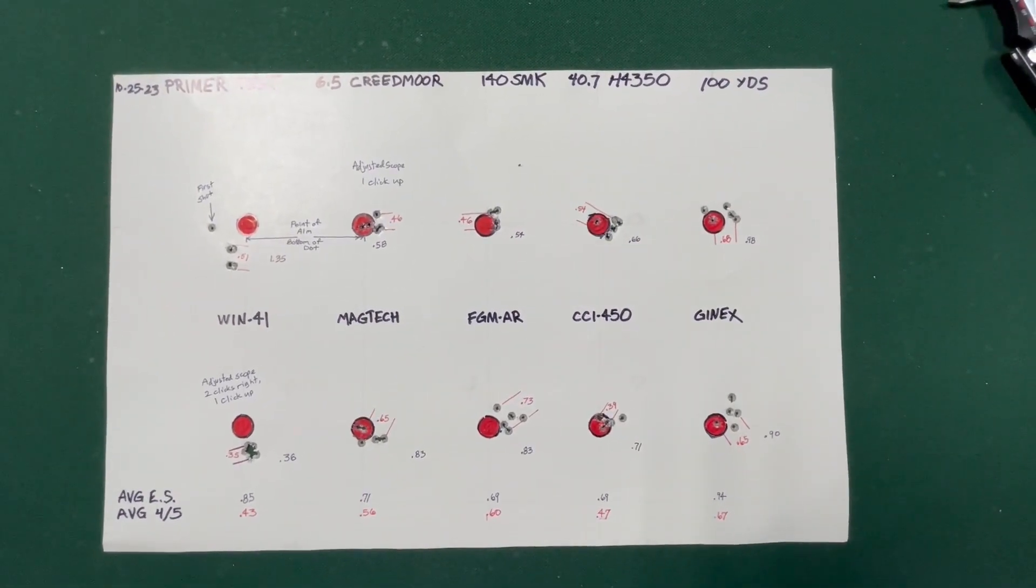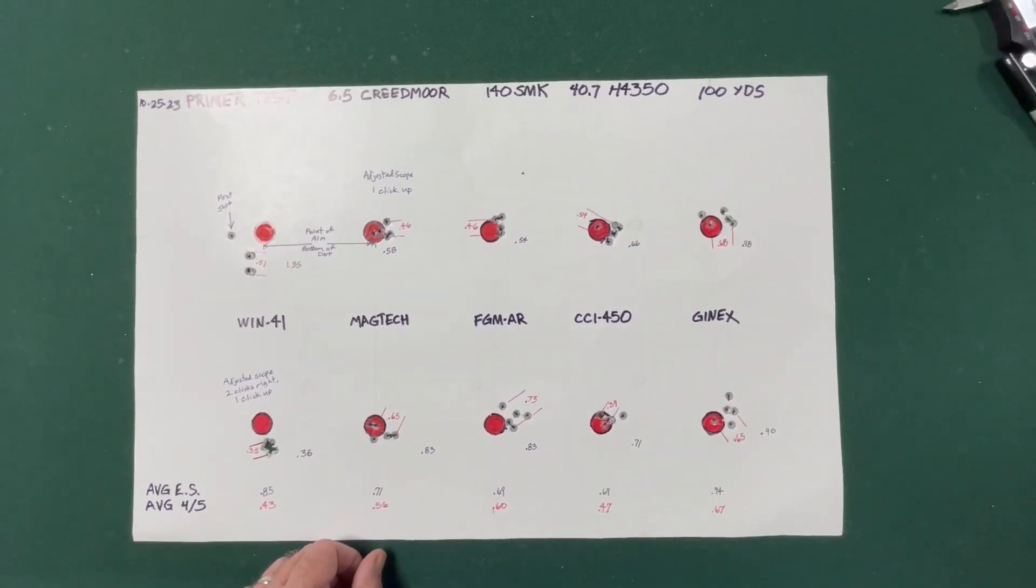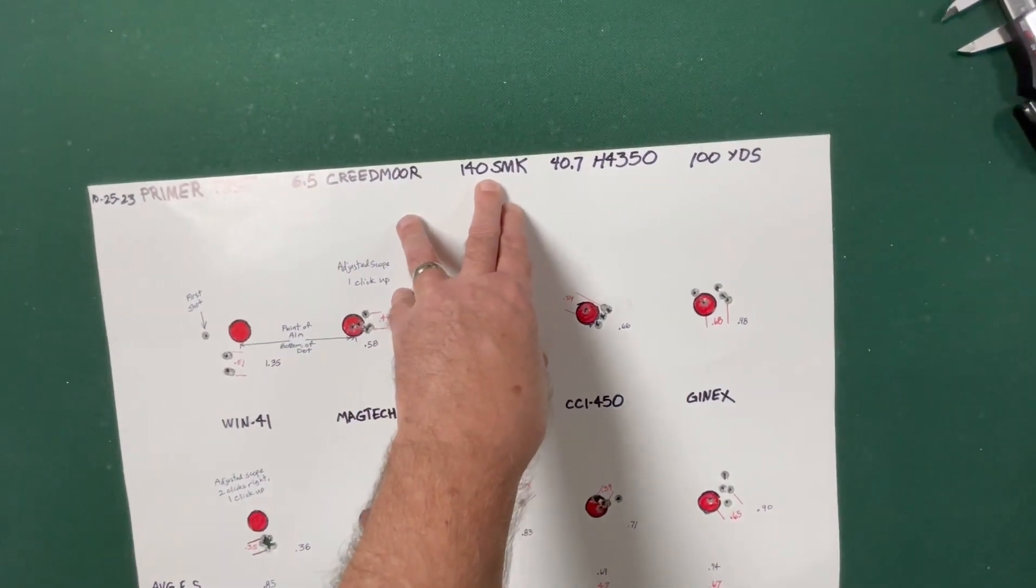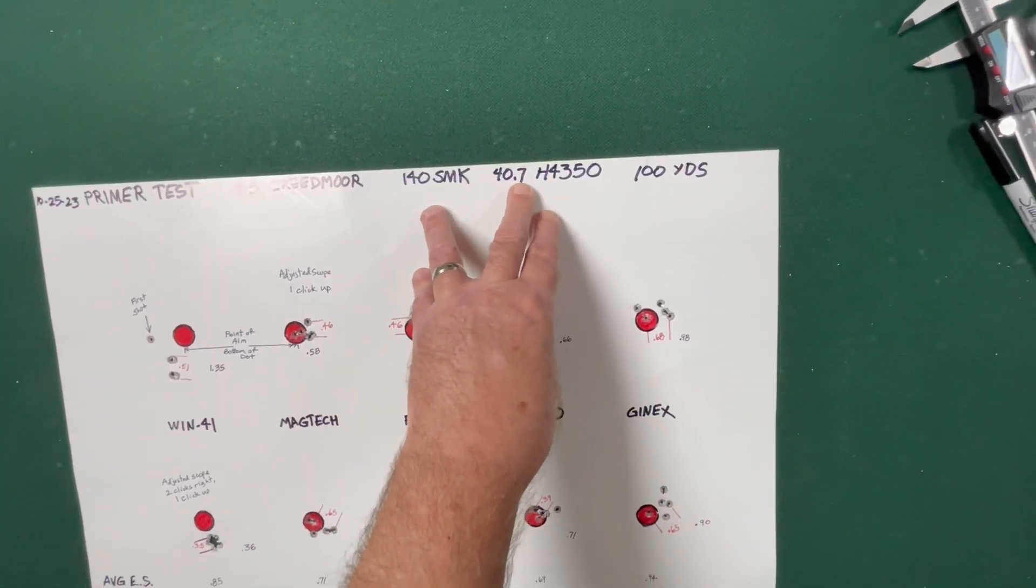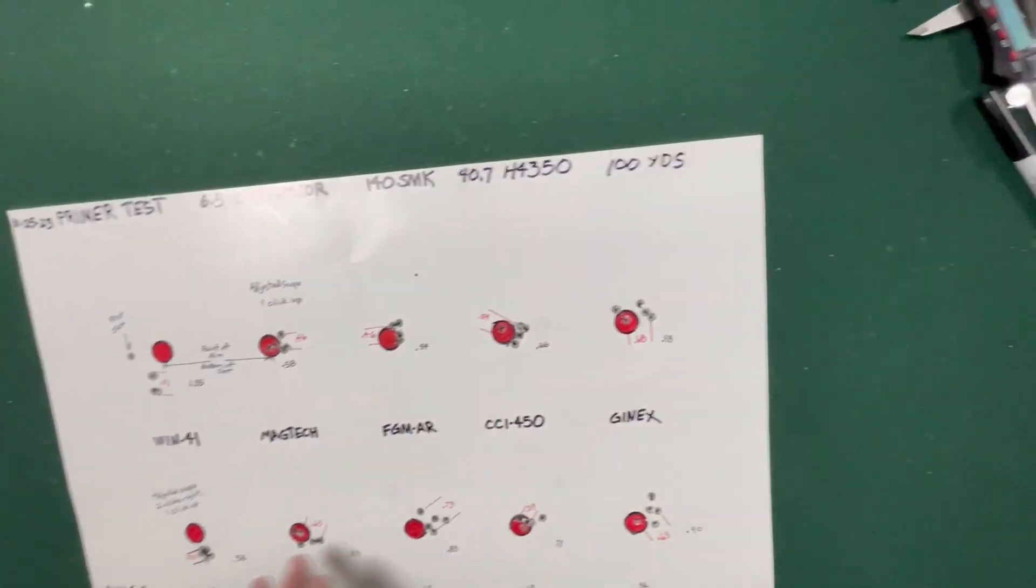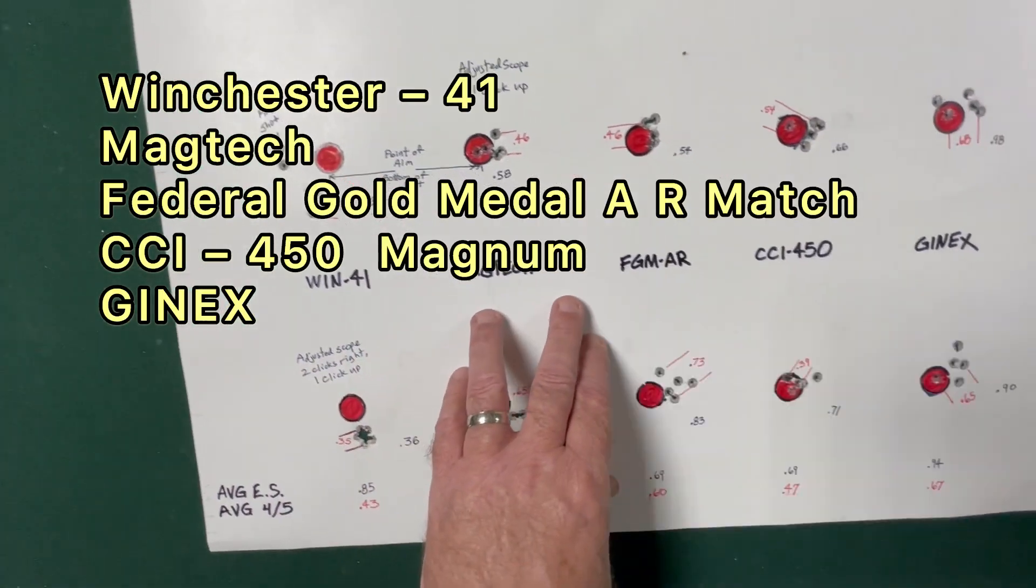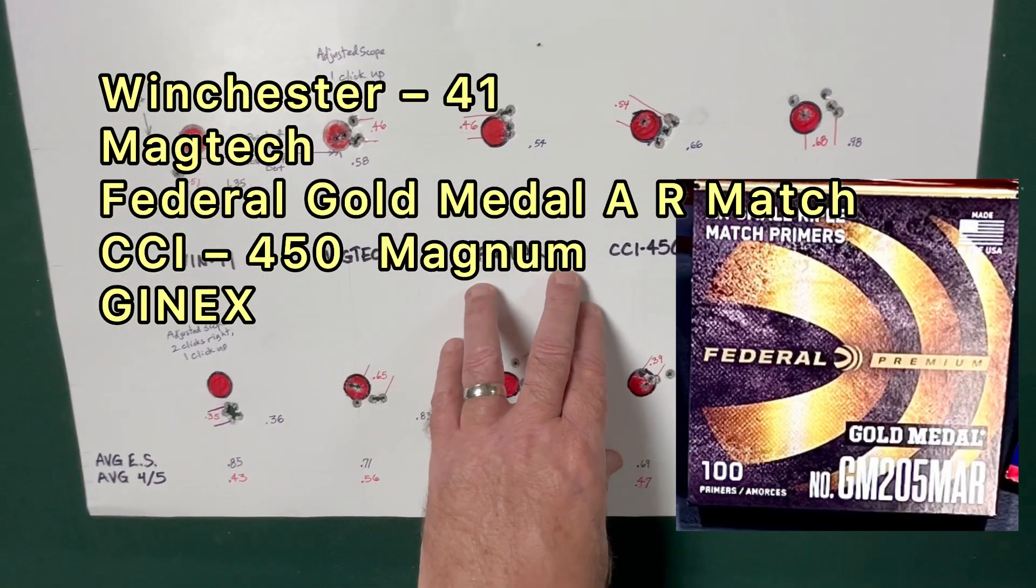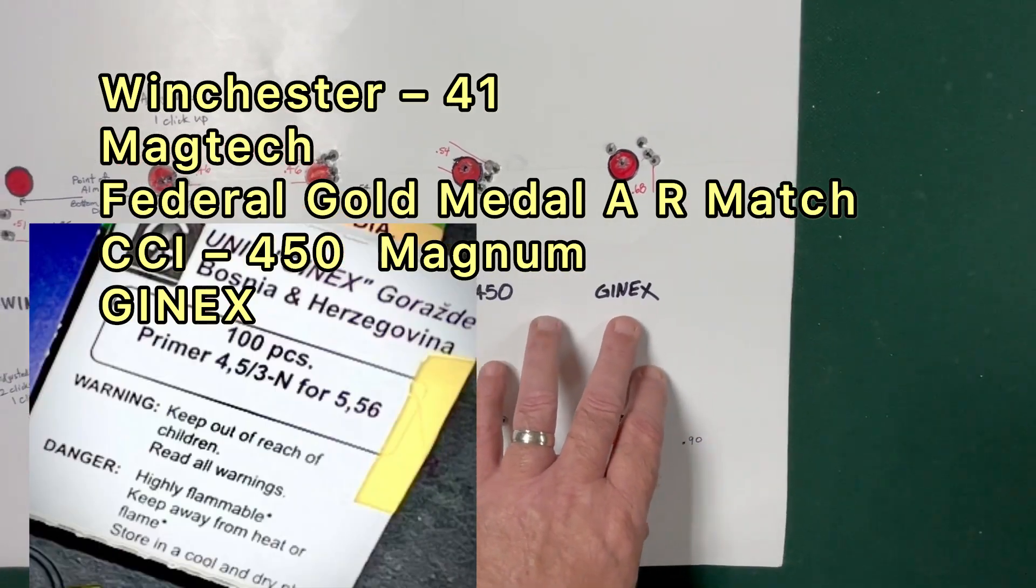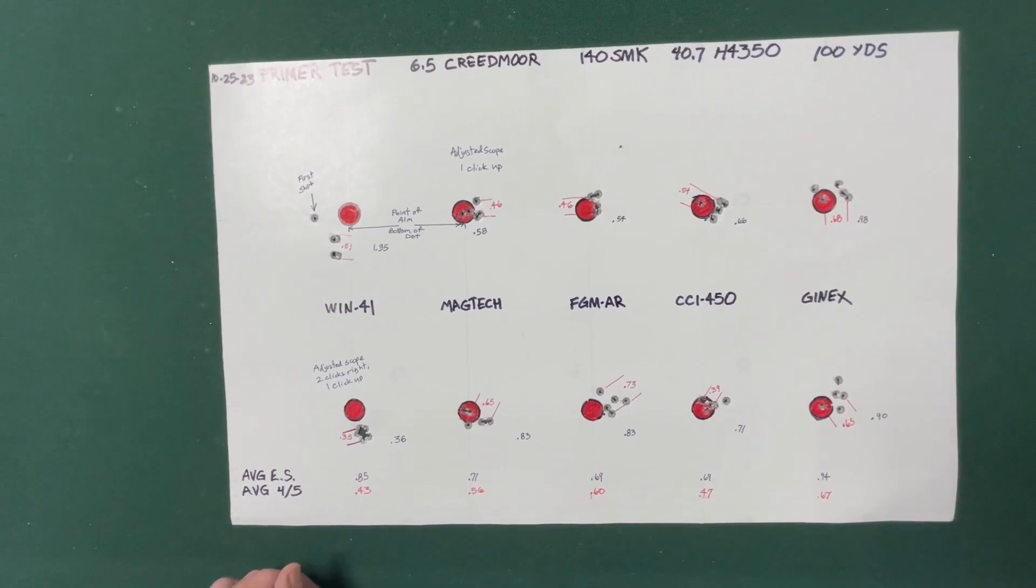Okay, here are my results from the range today. Just to give a brief recap, this was a primer test comparing five different primers on a 6.5 Creedmoor using a 140 grain Sierra Match King bullet with 40.7 grains of Hodgdon H4350 powder shooting at 100 yards. We were shooting Winchester 41, Magtech, Federal Gold Medal AR Match Primers, CCI 450 Magnum Primers, and Gen X Small Rifle Primers.